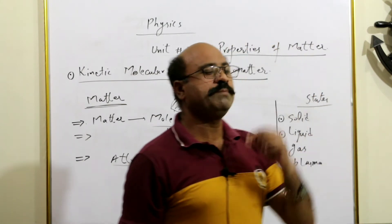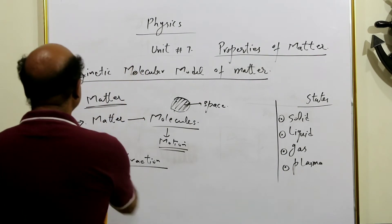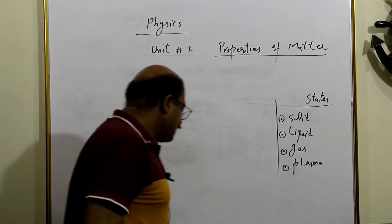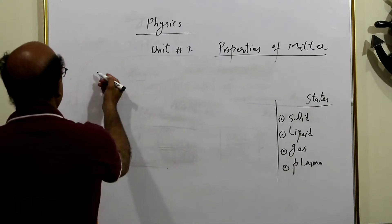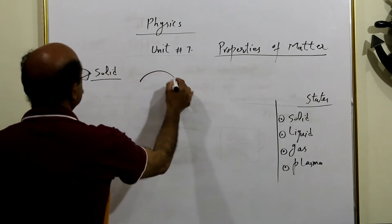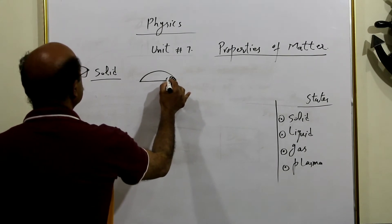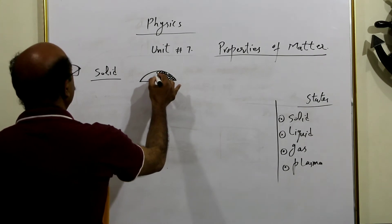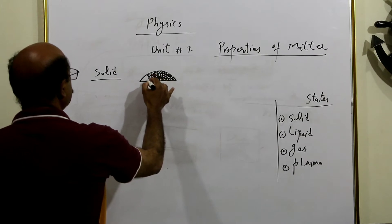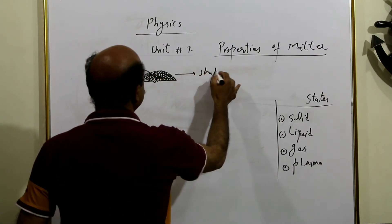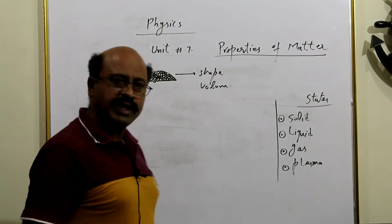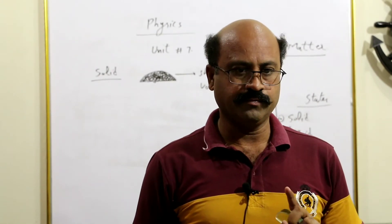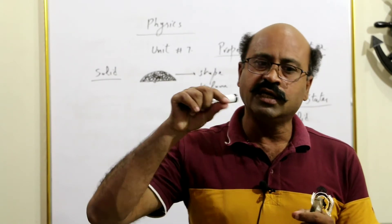Ab isi ko base bana ke hum states of matter ko discuss karenge. Mere paas ek glass slab hai. Yeh jin molecules se milkar bani hui hai, woh ek doosre ke saath compact packed hain. Intermolecular distances bilkul na hone ke barabar hain — un ke darmiyan kisi qisam ka koi fasla nahi, jis ki wajah se is ki khaas shape aur khaas volume hoti hai. The state of matter which has definite shape and definite volume will be named as solid state of matter.